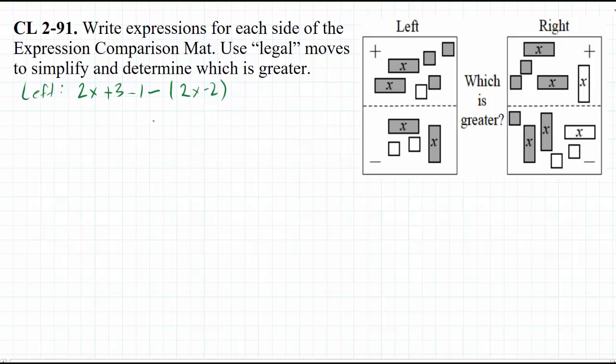Okay, now I'm going to go ahead and simplify this expression. And to do this, I'm going to take out this zero pair right here. So by doing that, that's really the 3 minus 1. So I'm going to have 2x plus 2 minus 2x minus 2.